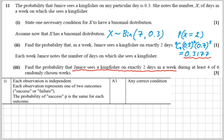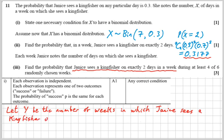So let's create a new binomial distribution here using a new variable, I'm going to call it Y. So I'm going to let Y be the number of weeks in which Janice sees a kingfisher on two of the days in that week.